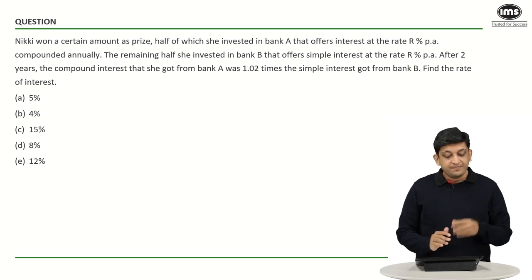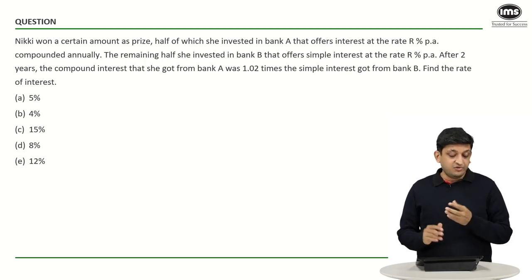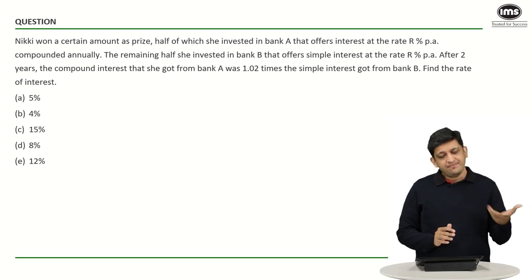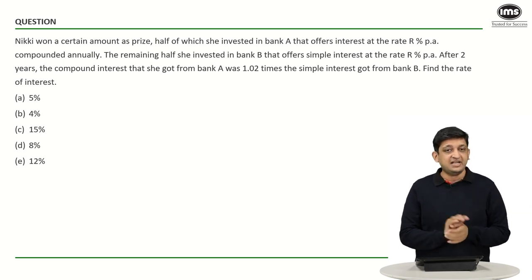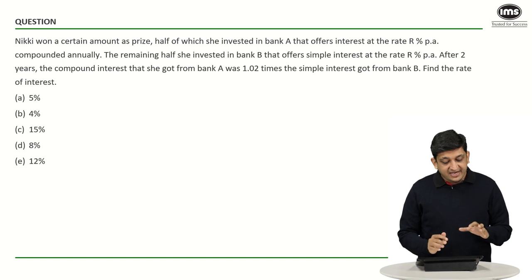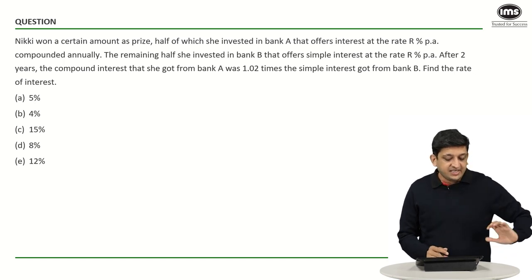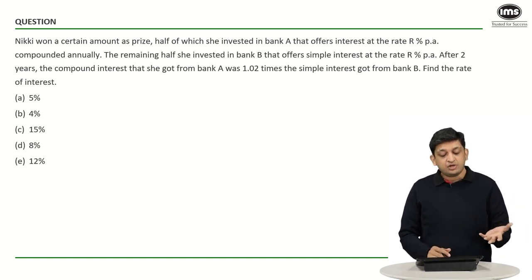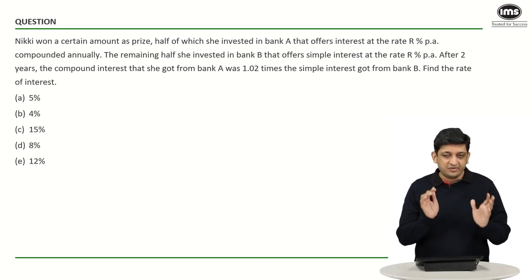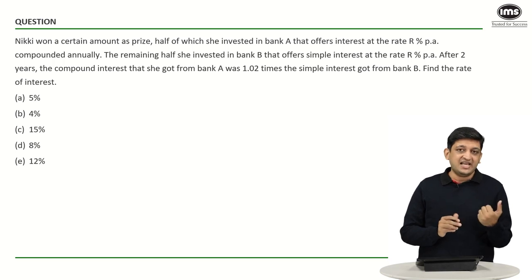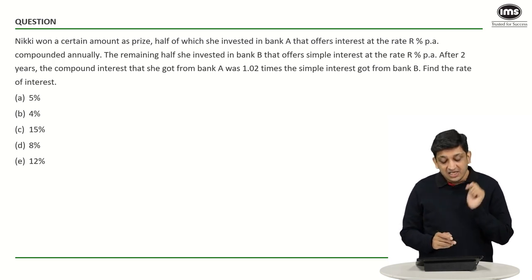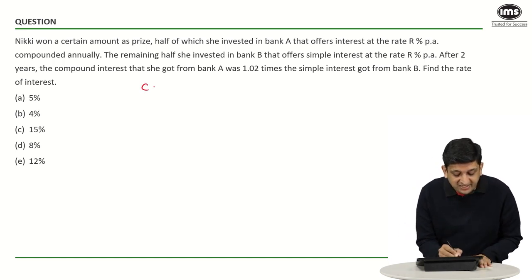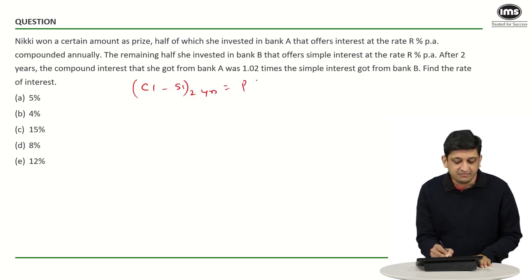In the third question, Nikki invested half of her prize money in bank A at R percent per annum compounded annually, and the remaining half in bank B at simple interest at R percent per annum. We are asked about the gap between SI and CI at the end of 2 years. The formula for the difference between compound interest and simple interest over 2 years is P multiplied by (R/100)².